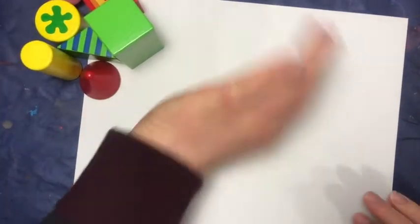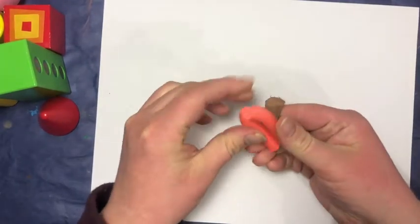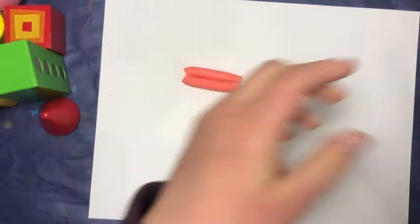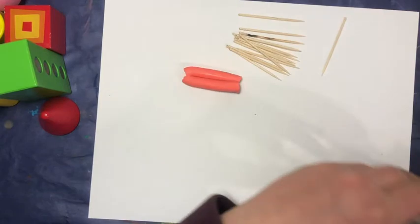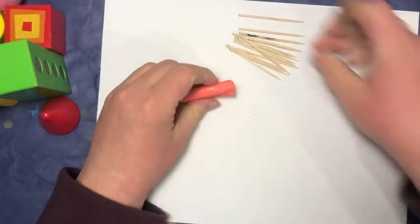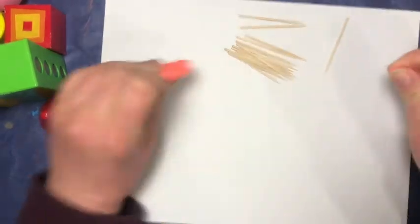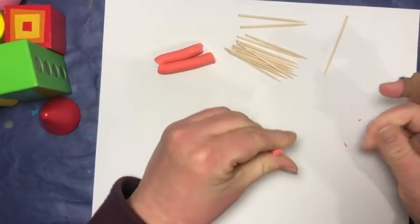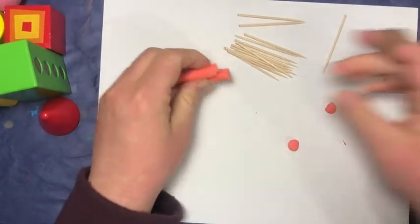We are going to learn how to make some today. So, everybody should have gotten little pads of modeling clay in your kit along with some toothpicks. So, what we are going to do is make some forms out of the toothpicks and the modeling clay.